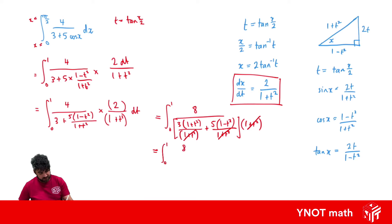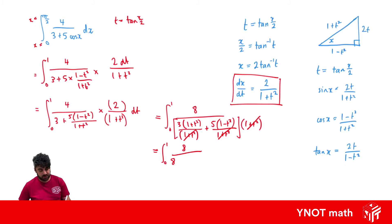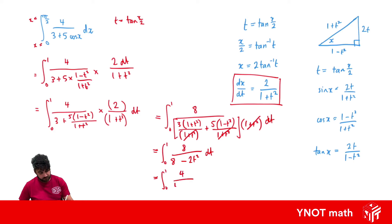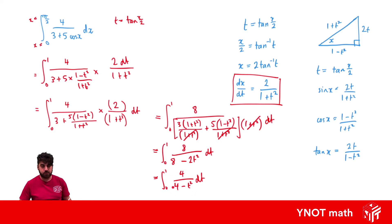Expanding the denominator: 3×1 + 5×1 = 8, and for the T² terms: 3T² − 5T² = −2T². The numerator is 4×2 = 8. Taking out a factor of 2, we get the integral from 0 to 1 of 4/(4 − T²) dt. We've turned that ugly integral into a more manageable one.